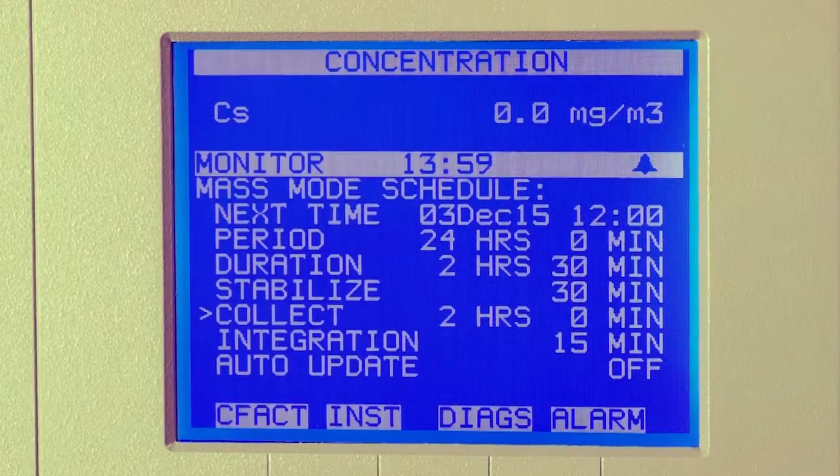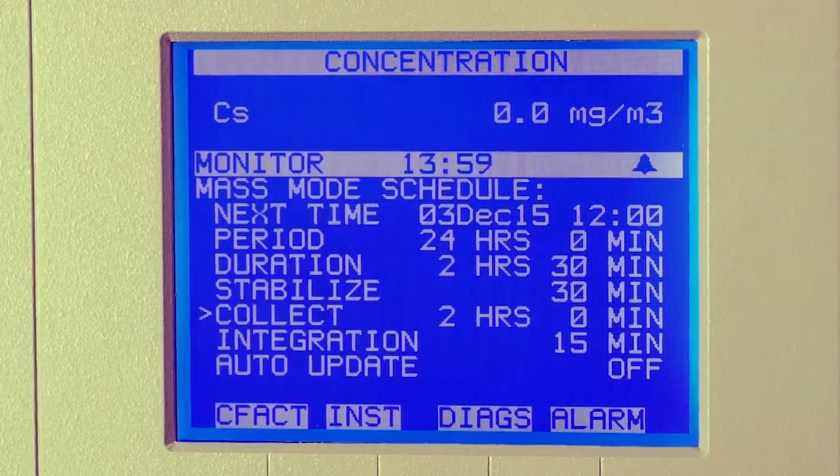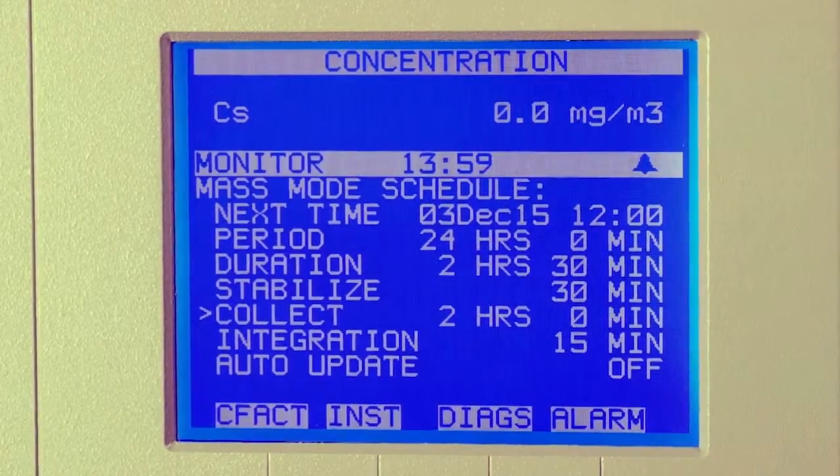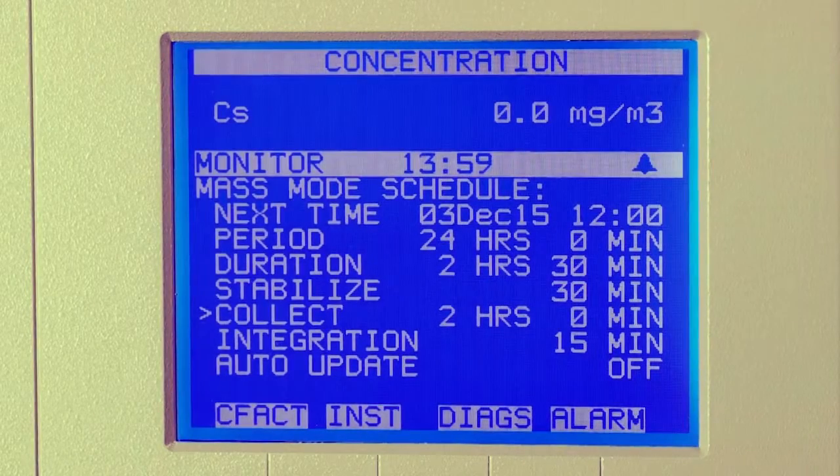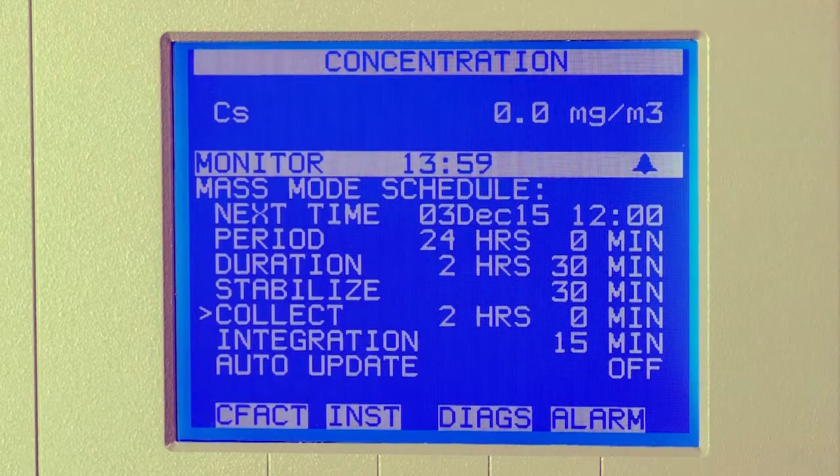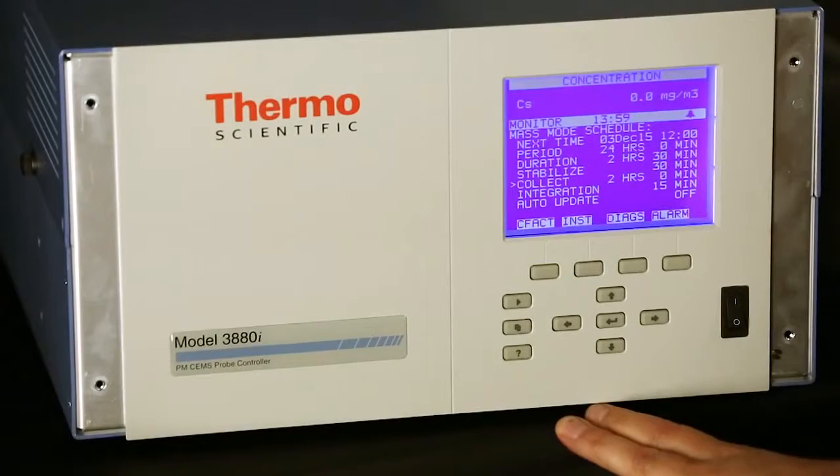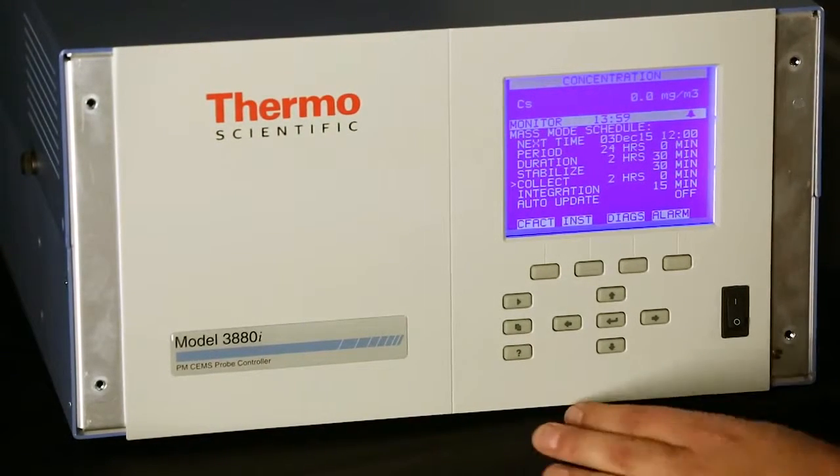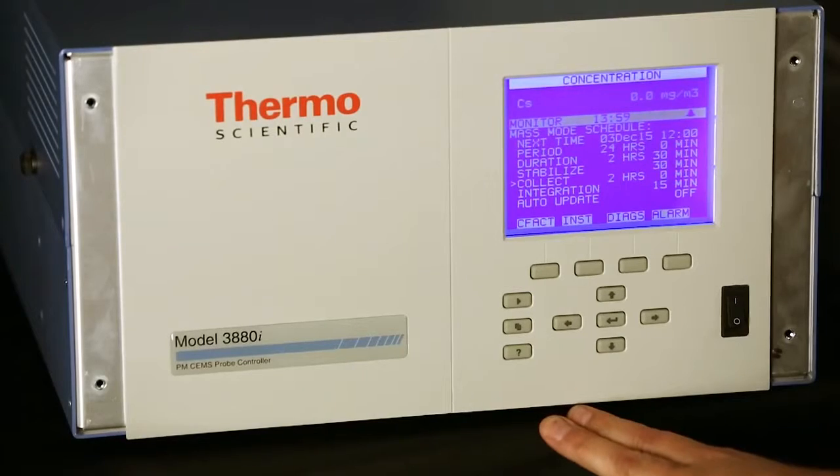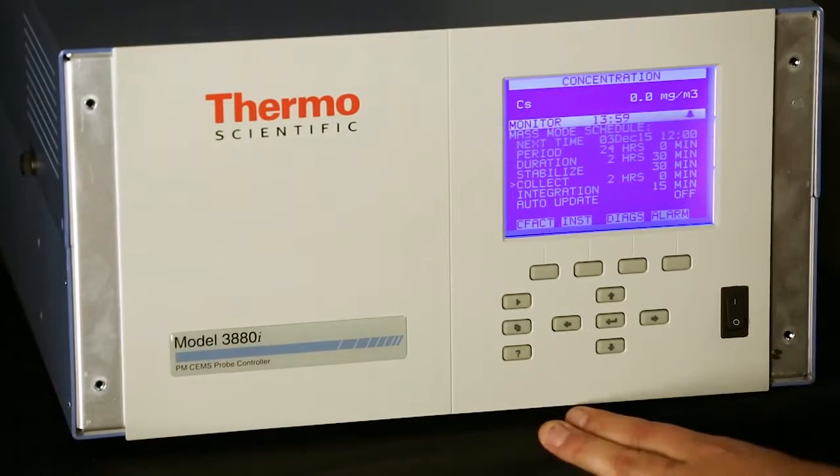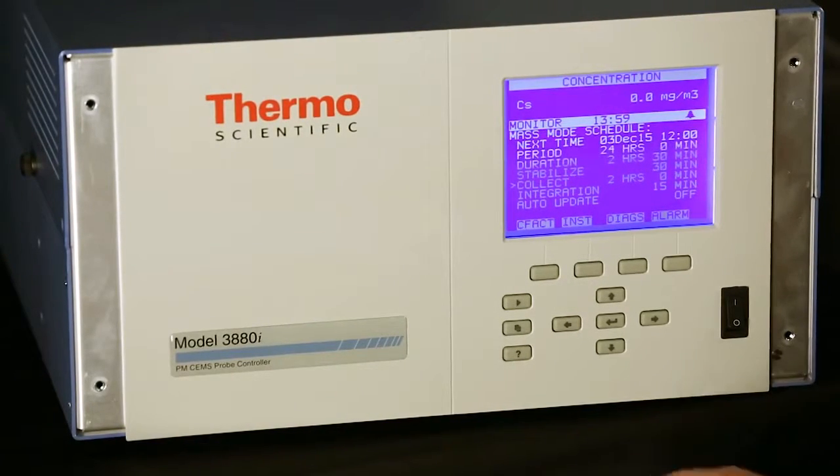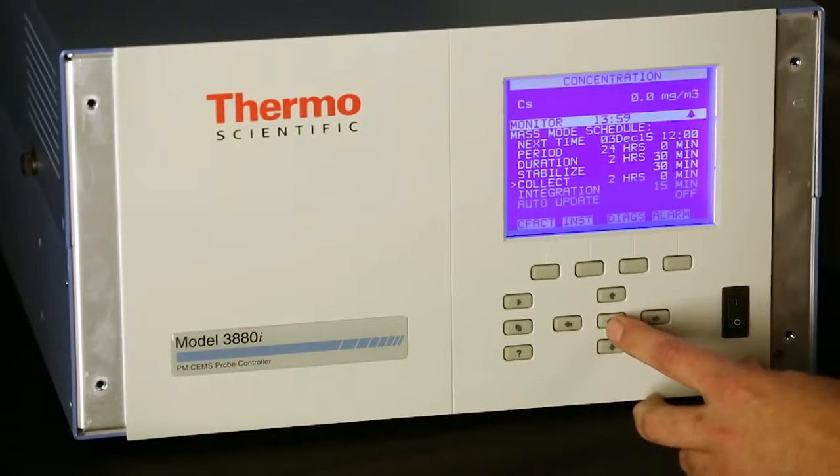Your minimum duration time to run a mass mode is two and a half hours. You can run it for longer if need be. In summary, set the instrument to 12 o'clock, two hours of collection, 30 minutes stabilization, keep the integration set at 15, then hit enter and you're set to go.